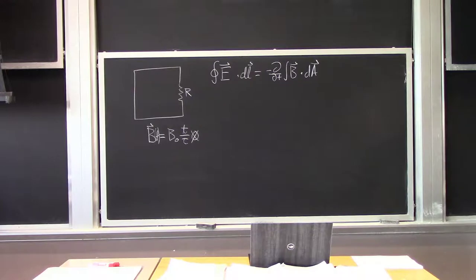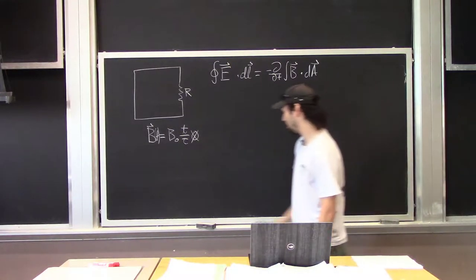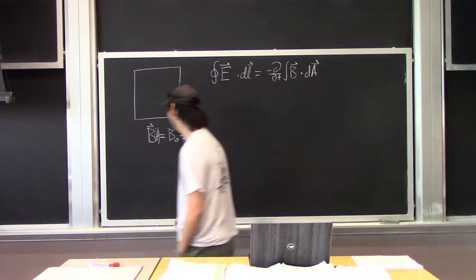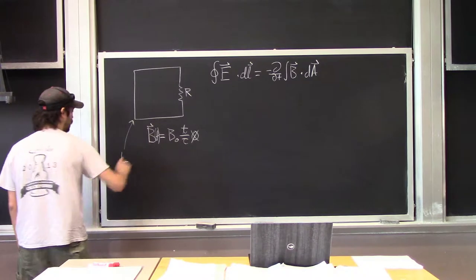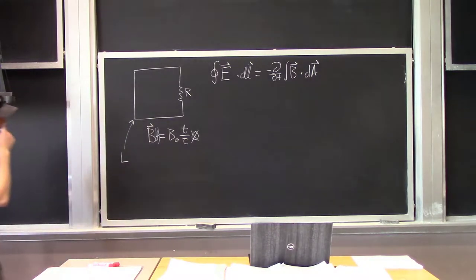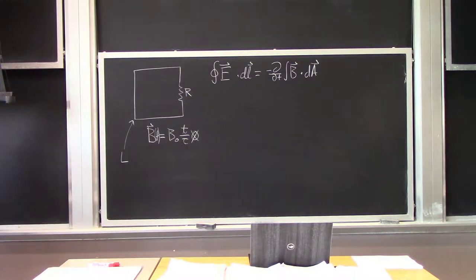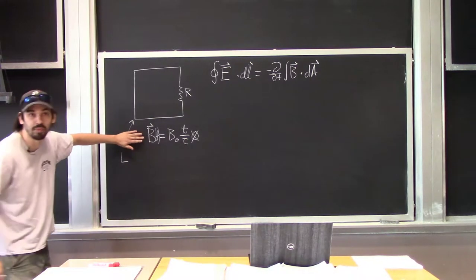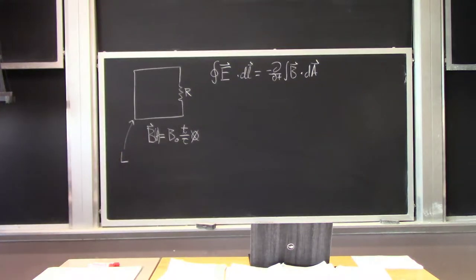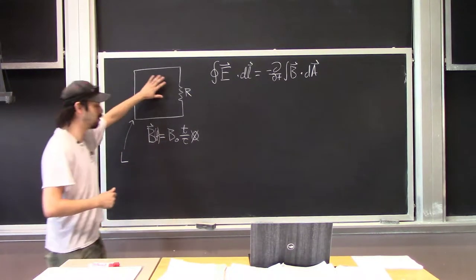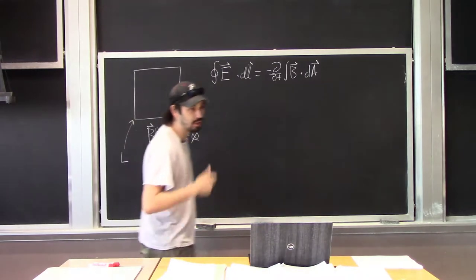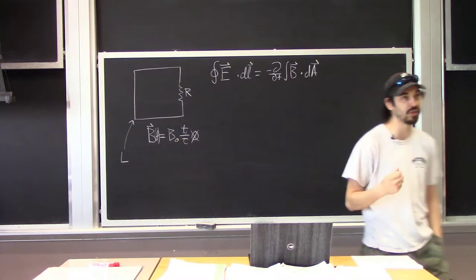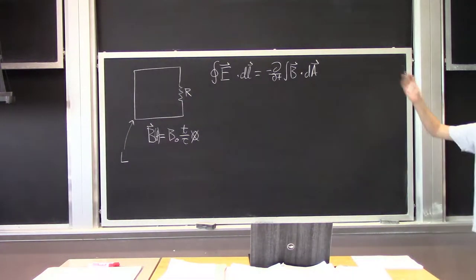This loop actually only has a resistor and also some inductance given by L. But instead of a battery, there is this time-dependent magnetic field that flows through the loop. And what we're going to see when we set up our equation is that actually serves exactly the same purpose as having a battery.